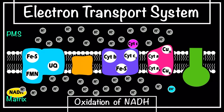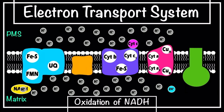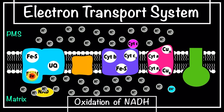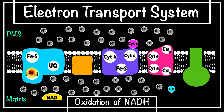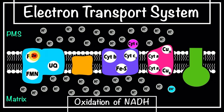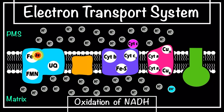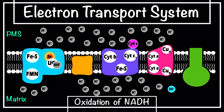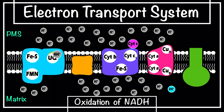Now let's see the mechanism of the electron transport system, also called oxidative phosphorylation, with respect to oxidation of NADH. The enzyme Complex I, or NADH dehydrogenase, oxidizes one molecule of NADH into NAD⁺ and releases two electrons. These electrons are acquired by the electron carriers of Complex I. FMN, or flavin mononucleotide, is the first electron acceptor, which then transfers the electrons to iron-sulfur proteins. Ubiquinone accepts the electrons from iron-sulfur proteins and gets reduced into ubiquinol (UQH₂).